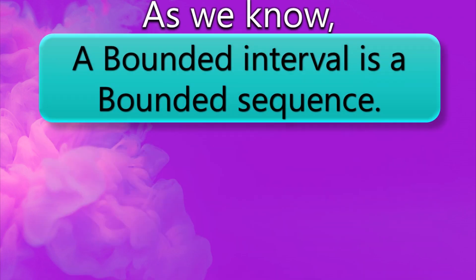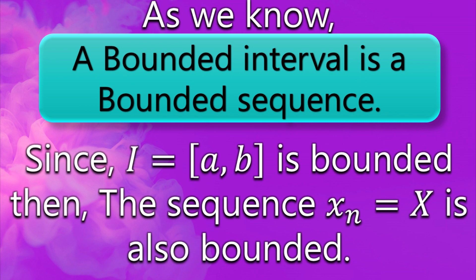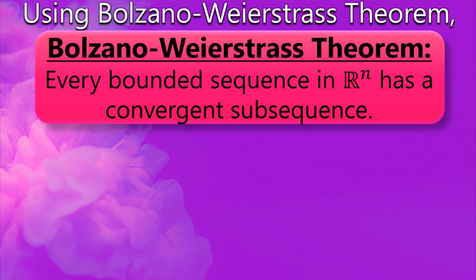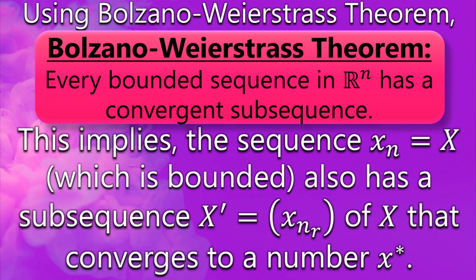Next, as we know that a bounded interval is a bounded sequence, and since I is a bounded interval, so we can say that the sequence X_n is also bounded. Now using Bolzano-Weierstrass theorem, which says that every bounded sequence in ℝⁿ has a convergent subsequence, so this implies that the sequence X_n, which is bounded, also has a subsequence.